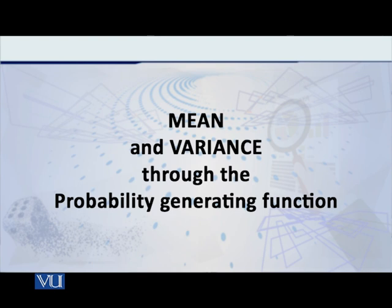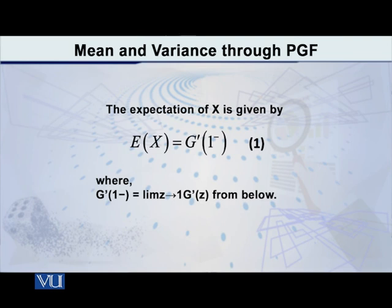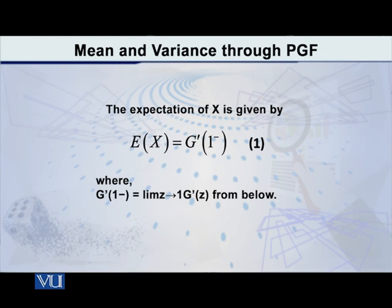Here is the formula. The expected value of X, or the mean of the random variable X, is given by g prime of 1 minus, as you can see on the screen. I have to explain what is meant by g prime of 1 minus. The g prime means we are taking the first derivative, and 1 minus means we are taking the limiting value of g prime of z as z tends to 1 from the left-hand side — that is, approaching from smaller values on the left.